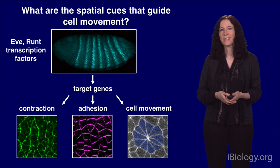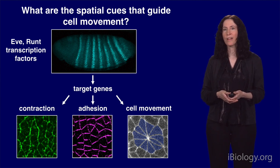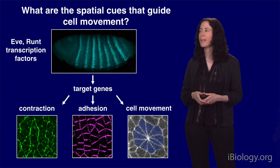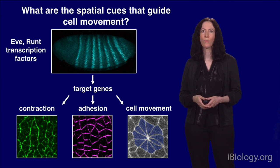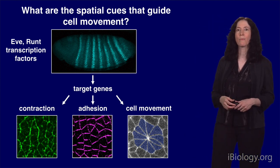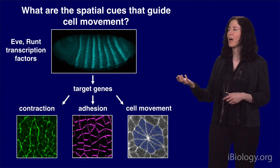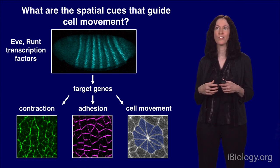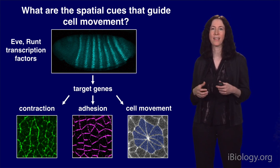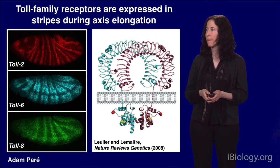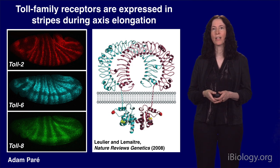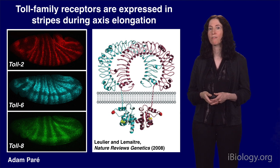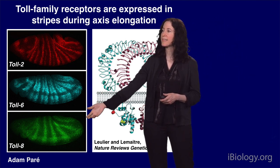To identify these targets, Adam Pare, a postdoc in the lab, used RNA sequencing to compare gene expression profiles between embryos where both Eve and Runt were knocked down by RNA interference with water-injected controls. He was looking for proteins that are targets of Eve and Runt, are expressed in stripes, and localize to the surface of cells where they could directly regulate cell polarity and behavior. Using this approach, Adam identified three transmembrane proteins in the Toll receptor family as targets of Eve and Runt during axis elongation: Toll 2, Toll 6, and Toll 8.